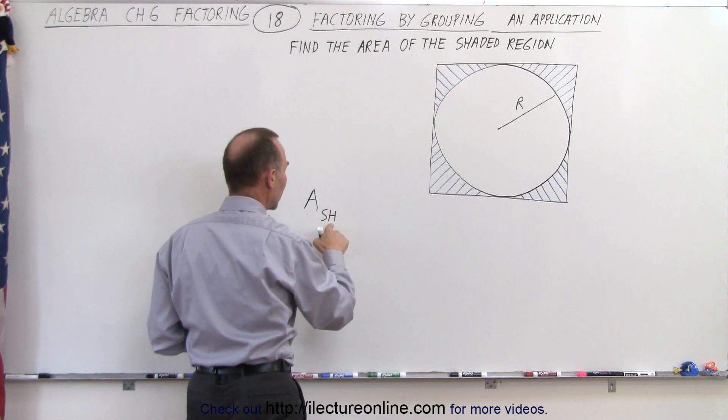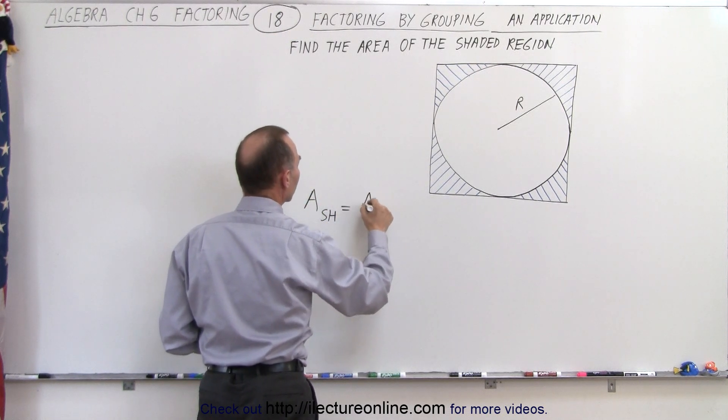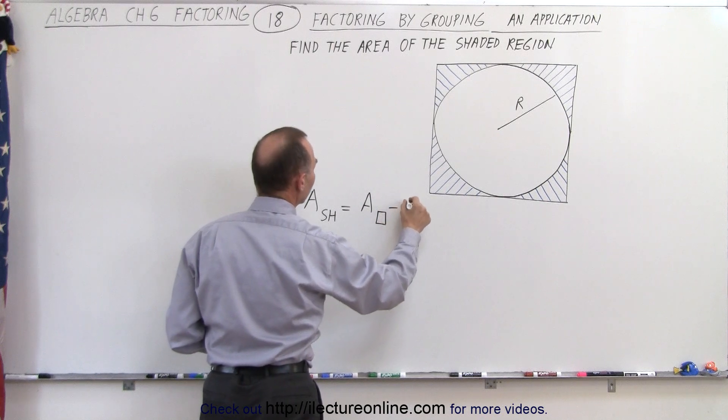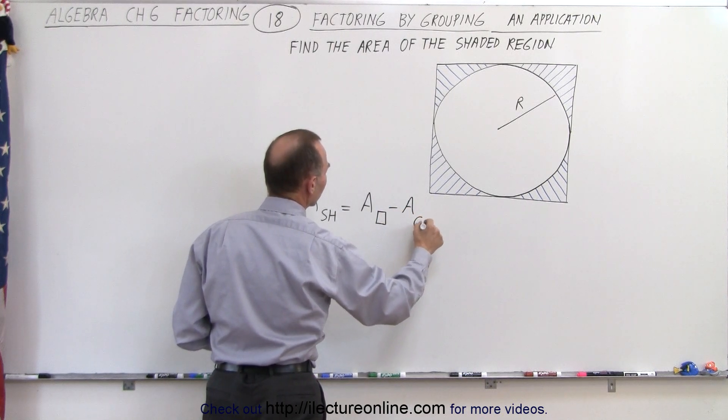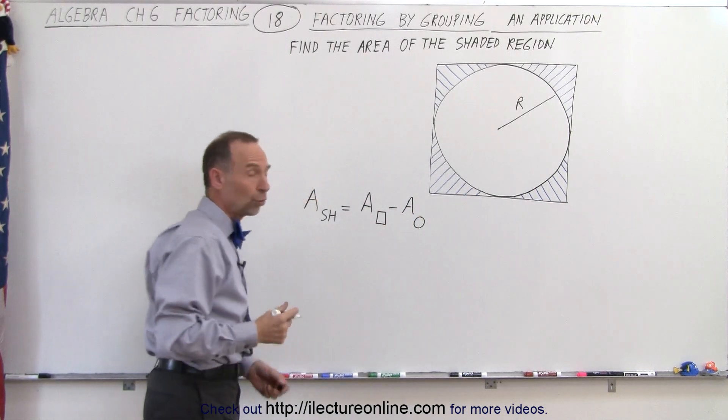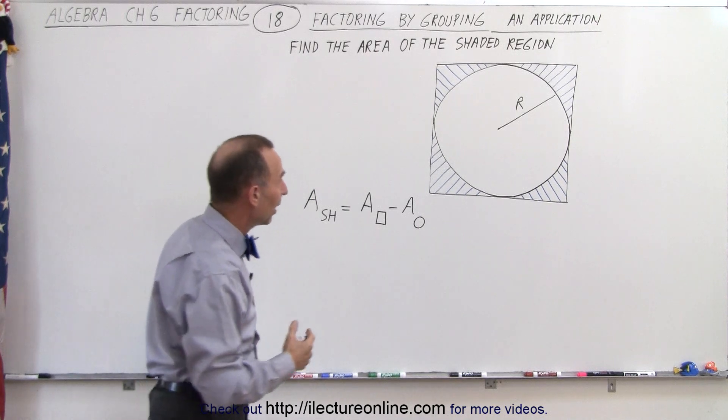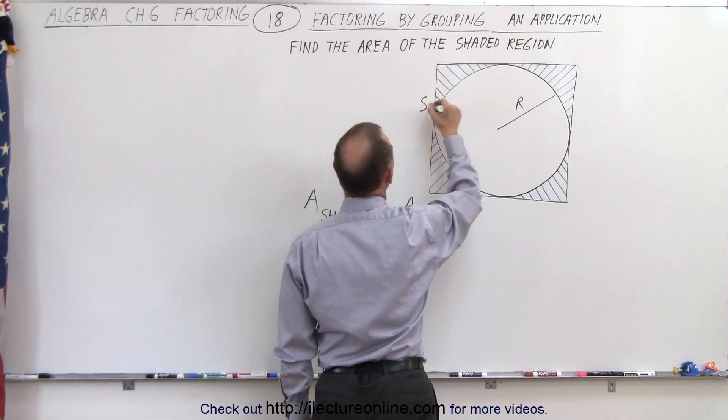I'll write it A sub SH, is equal to the area of the square minus the area of the circle. Now the square has equal sides or sides of equal length, so let's call that S.